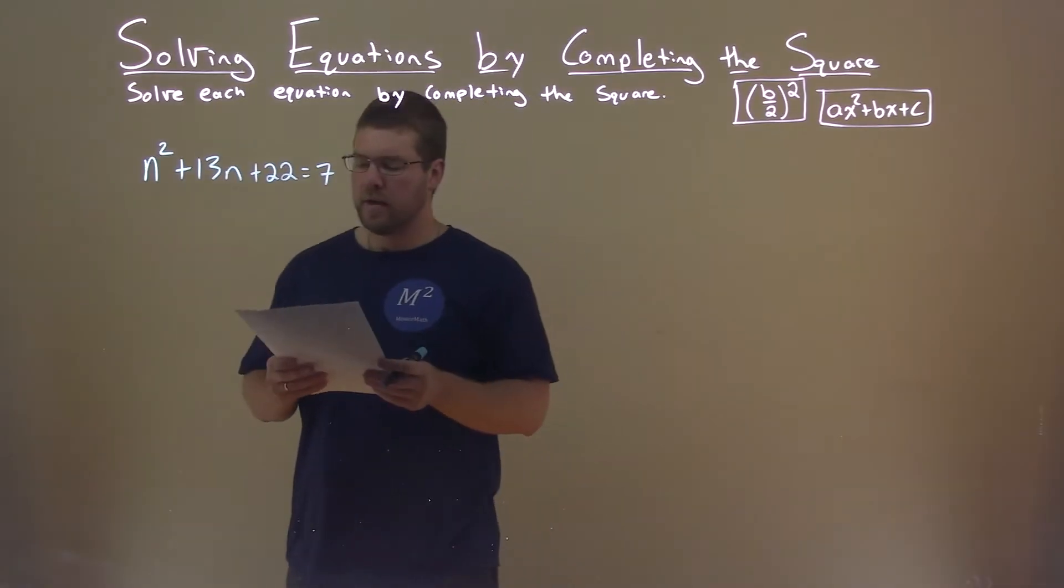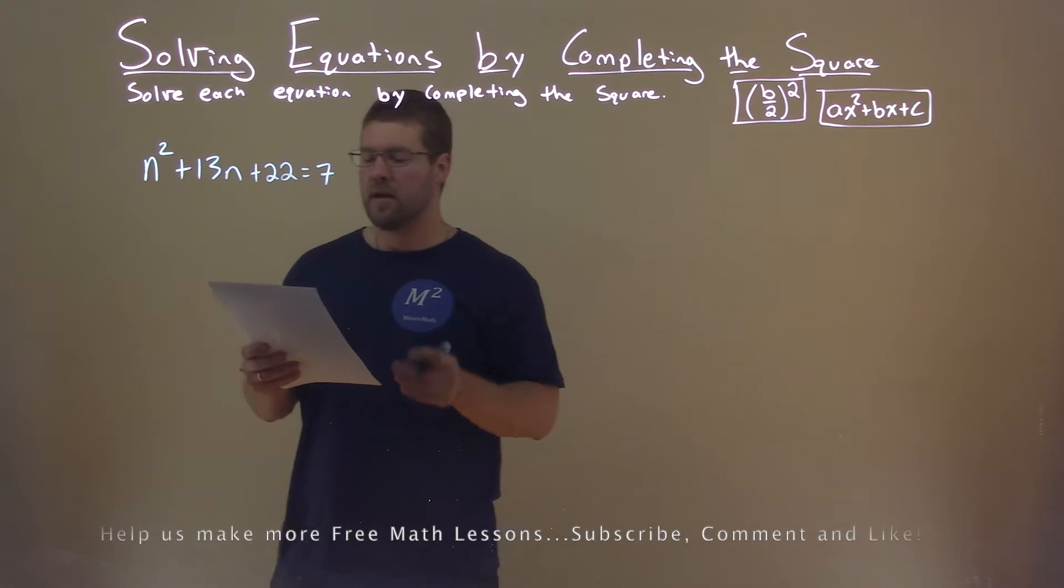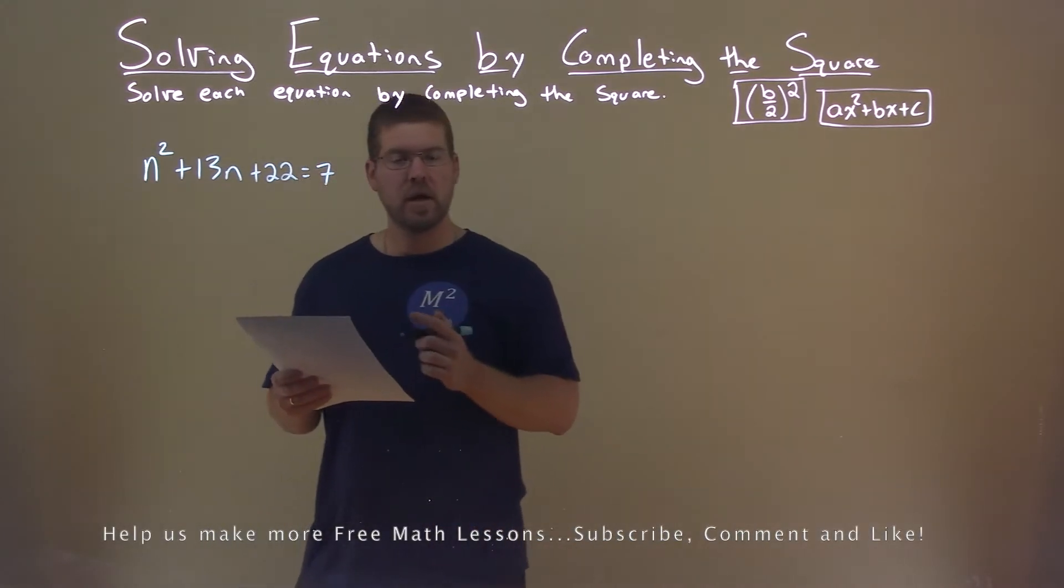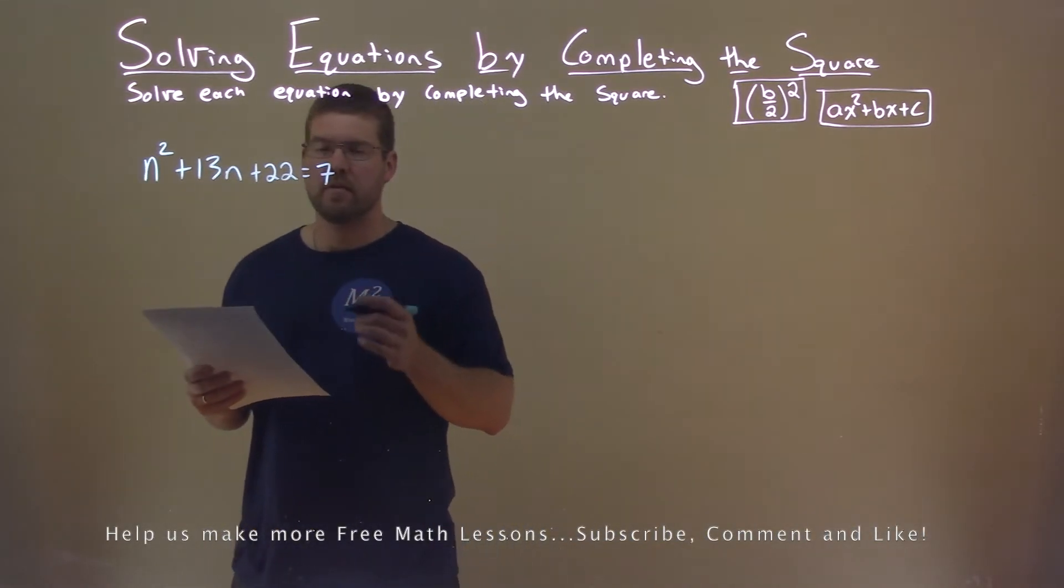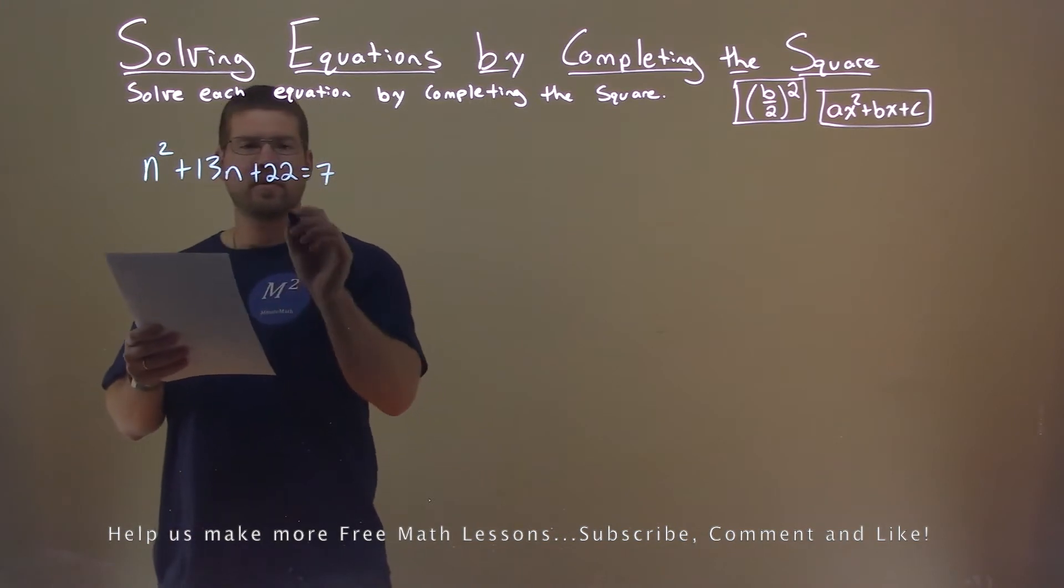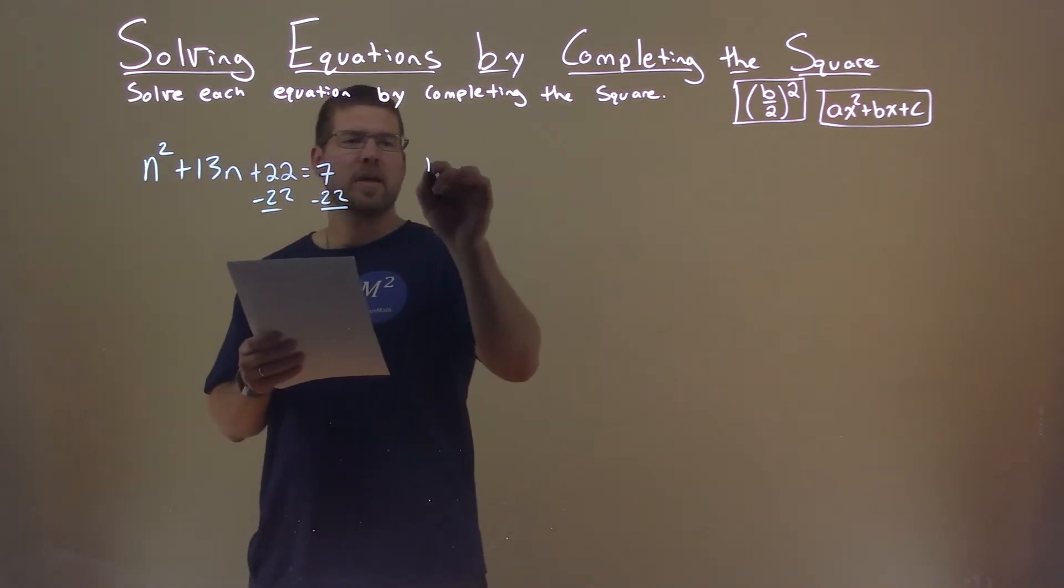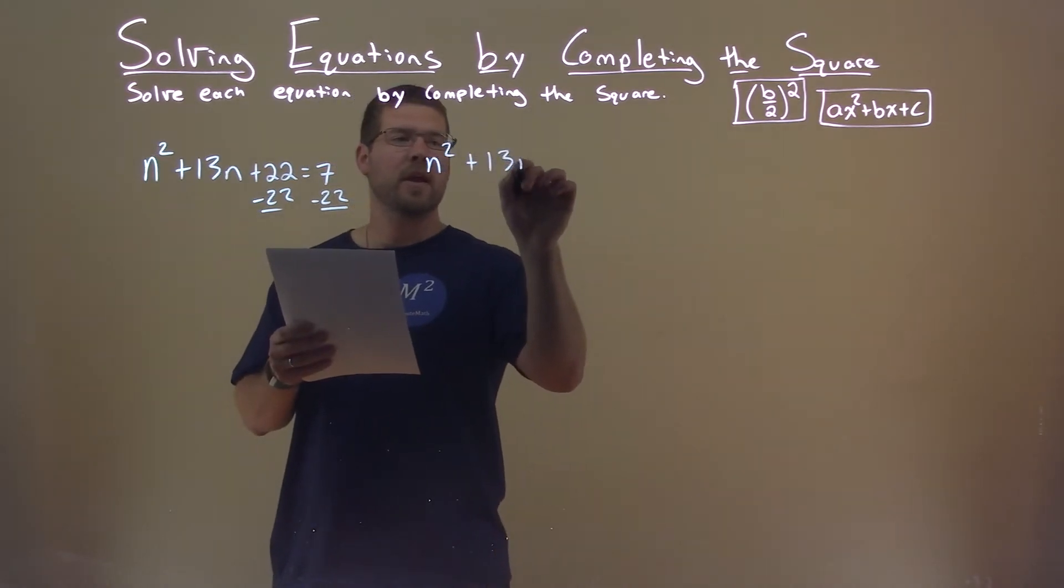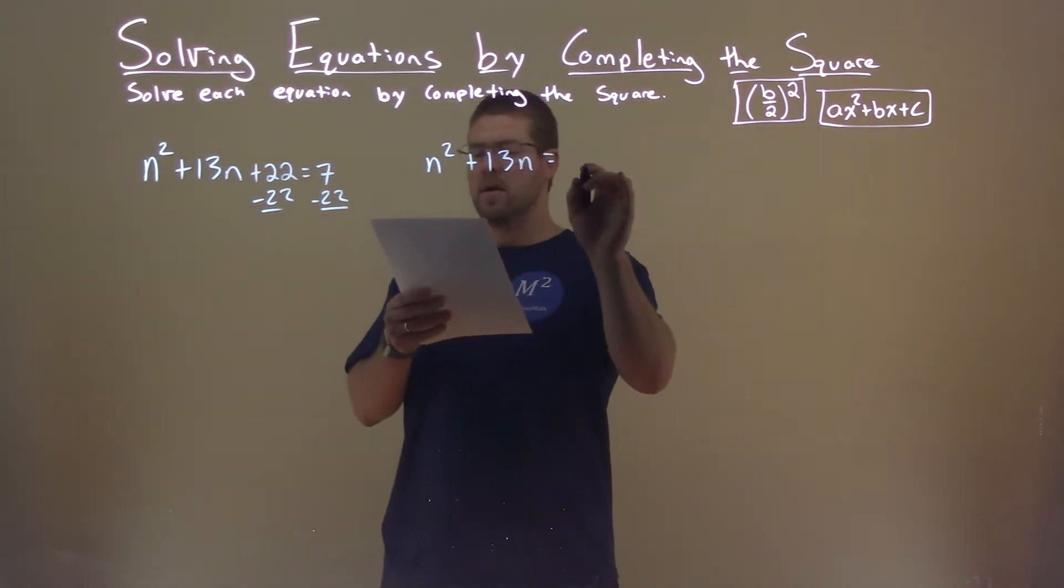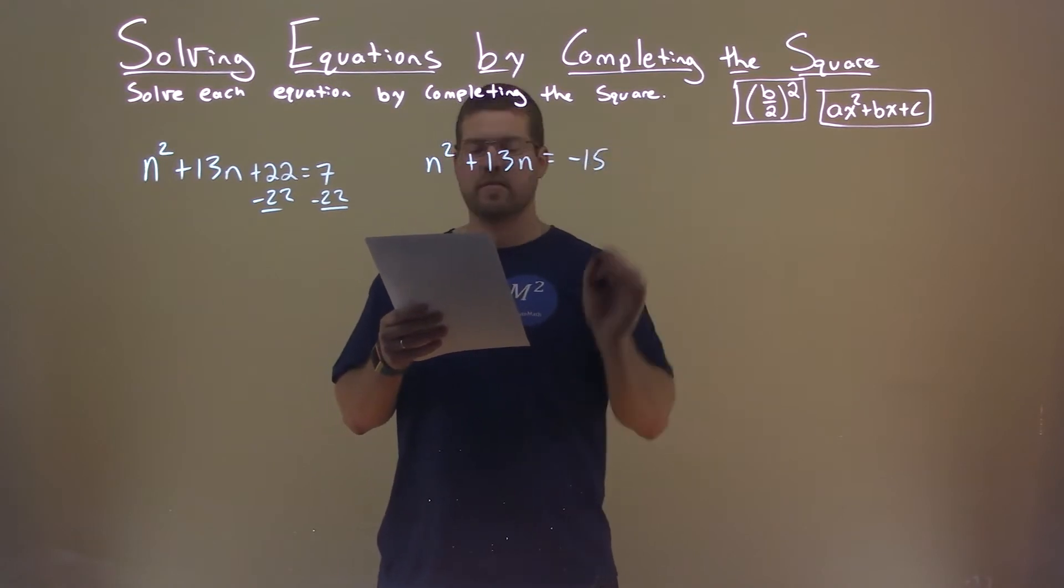We're given this problem right here, n squared plus 13n plus 22 equals 7. We want to solve this by completing the square. First thing I'm going to do is subtract 22 to both sides. I'm left now with n squared plus 13n equals 7 minus 22, which is negative 15.